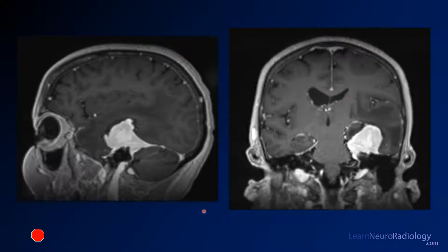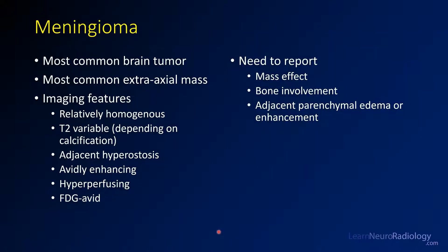As mentioned, this is a meningioma. Considering all brain tumors, it is the most common brain tumor overall and also the most common extra-axial mass. To recap imaging features: it's a relatively homogeneous mass that can be T2 bright or T2 variable. About 25% have calcification causing dark areas. Adjacent hyperostosis — new bone formation — is a useful clue. They tend to be avidly enhancing, hyperperfused, and can even be FDG-avid on PET. When reporting, note mass effect, bone involvement, and adjacent parenchymal edema or enhancement, as those suggest parenchymal invasion.